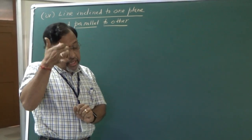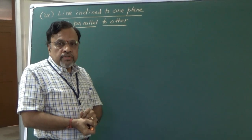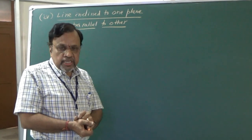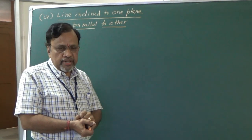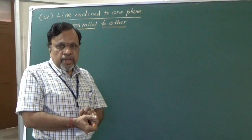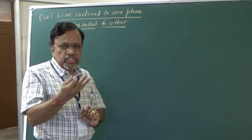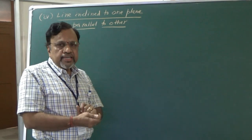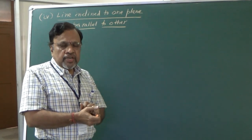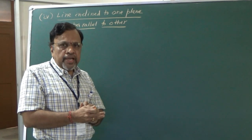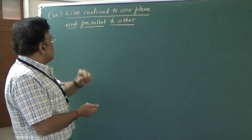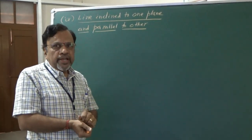Good morning. In the previous session, I started with projections of lines. We discussed three different cases: a line parallel to one plane or parallel to both HP and VP, a line contained in one plane or both planes, and a line perpendicular to one plane and parallel to the other. Today, let us consider the case where the line is inclined to one plane and parallel to the other.